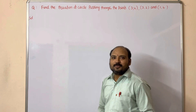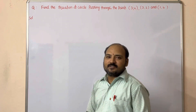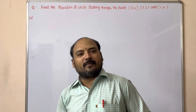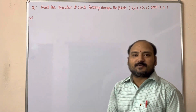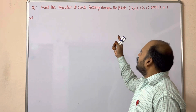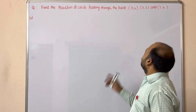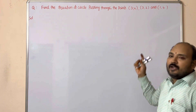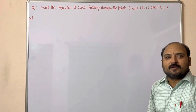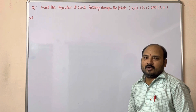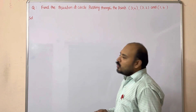Hi dear friends, welcome to our channel Maths with Panindra. In this video, we are discussing circles seven-mark questions. Find the equation of a circle passing through the points (3,4), (3,2), and (1,4). Sometimes this question is asked for four marks, so it is better to prepare it for seven marks.